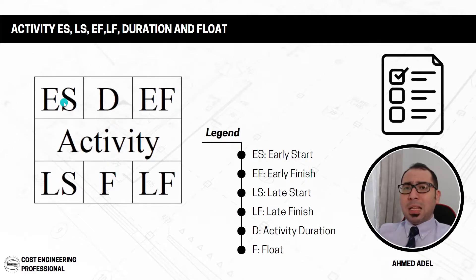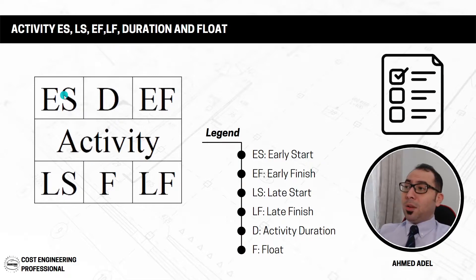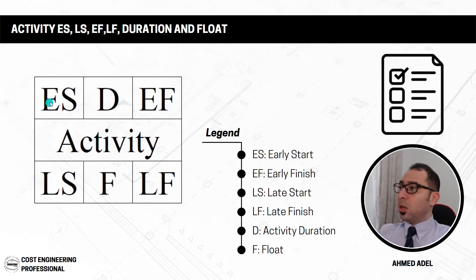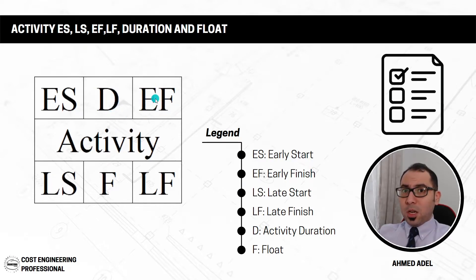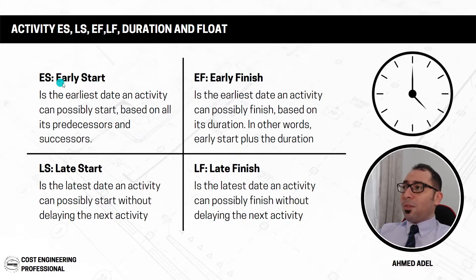There is a confusing point regarding the early start: sometimes people start from day one and sometimes from zero. Starting from zero is much better. With zero-based counting, early finish equals early start plus duration — so zero plus five equals five. If you start from one, you'd need to calculate one plus five minus one to get the correct early finish, which is more error-prone. Always start with zero.